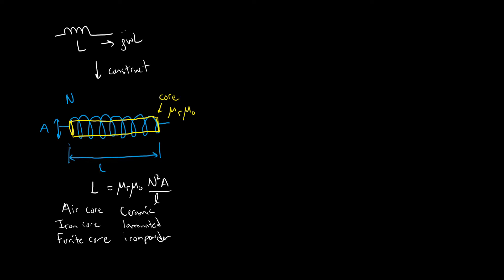Even with this simple model, we can construct a slightly more complex circuit model. The first thing is that wire has finite conductivity — copper has finite conductivity — which means you're going to have some resistance. We refer to this resistance as the equivalent series resistance, or DCR as some manufacturers call it. It's a resistor in series with your inductance. This is a lumped element model.